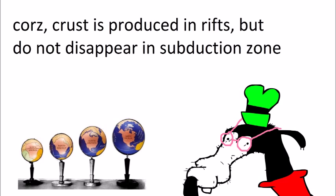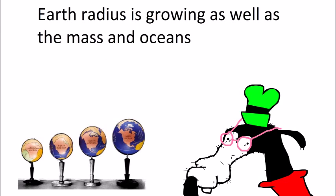Of course, crust is produced in rifts, but does not disappear in subduction zones. Earth's radius is growing, as well as the mass and oceans.